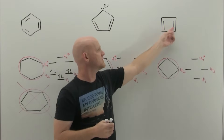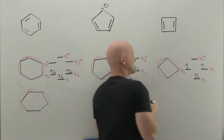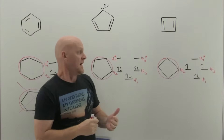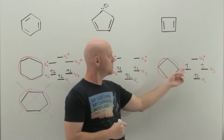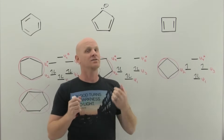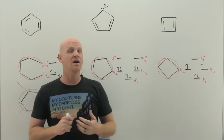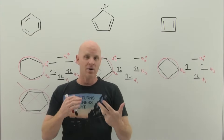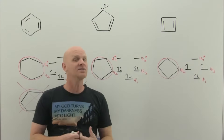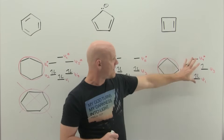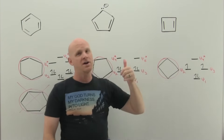Cyclobutadiene has four pi electrons. We fill in psi 1, and then with two more electrons we have to give one each to psi 2 and psi 3, with the same spin — both spin up or both spin down. Two of the pi electrons are in non-bonding orbitals, which is higher energy. More critically, we have two unpaired electrons — making it a diradical. A diradical is exceptionally reactive, giving us confirmation from MO theory of why anti-aromatic compounds are so unstable.